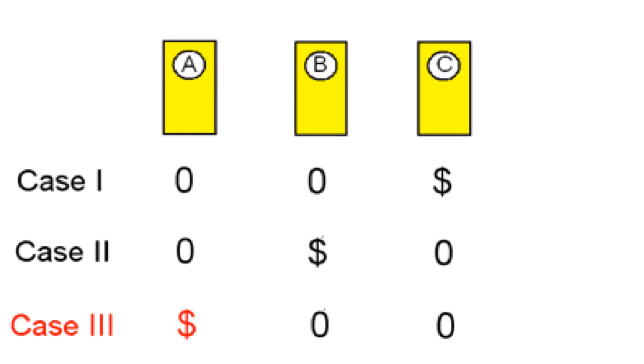Since you obviously have no idea which of the three cases you're faced with, you choose one of the three doors at random. Say you choose door A.